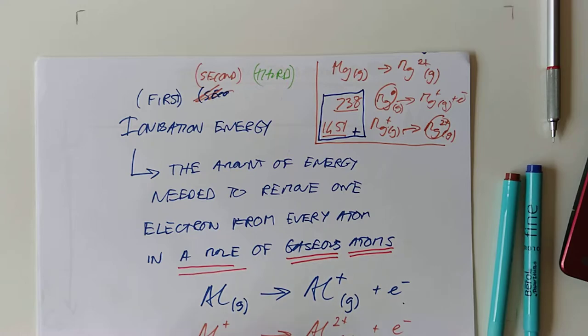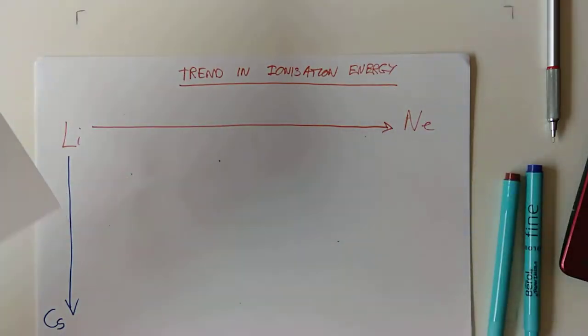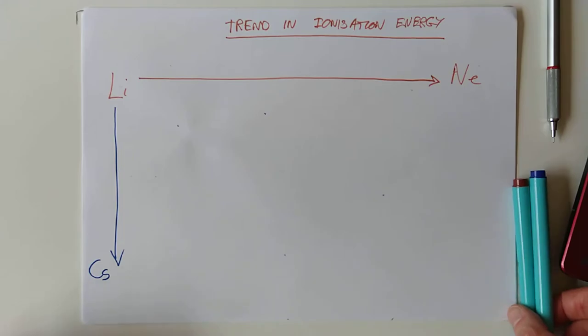Now, this preamble is all defining what the heck ionization energy is. So, hopefully that's clear now. The main point of this video was supposed to be, what's the trend in ionization energy? So, we'll come back to that. So, the trend in predictions.